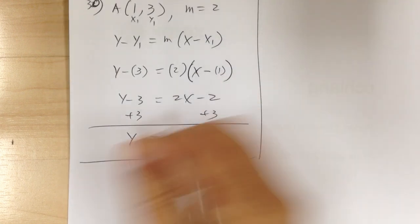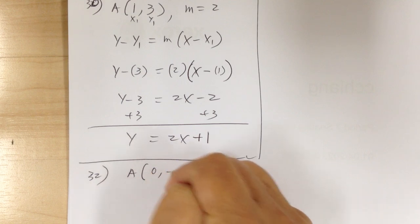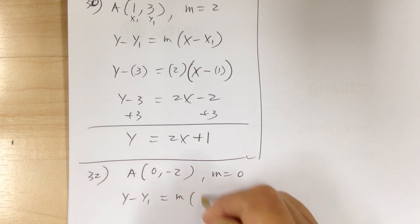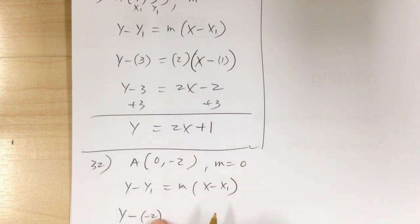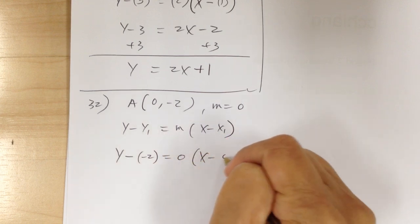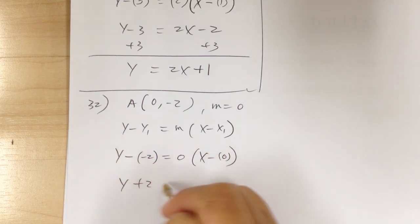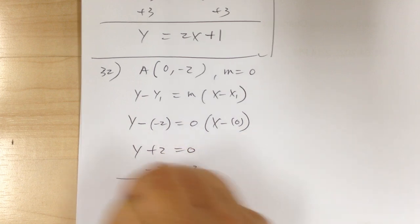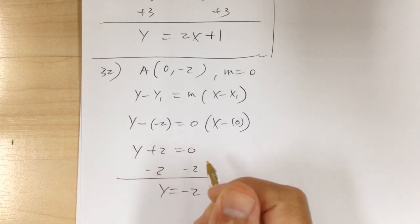Now number 32: point (0, negative 2) and slope equals 0. Using point-slope form y minus y1 equals m times (x minus x1): substituting gives y minus (negative 2) equals 0 times (x minus 0). Since 0 times anything is 0, you get y plus 2 equals 0.